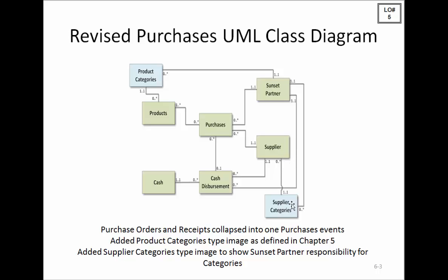We have a new type image where we're categorizing suppliers by supplier category. In this case, we've collapsed purchase orders and receipts into one purchase event. We would separately identify the date the order was placed and the date the materials were received, so we can record the purchases in a timely manner and separate those from the orders.